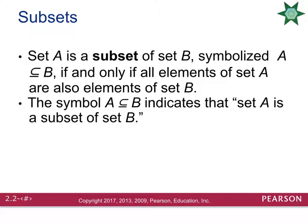The first thing we need to do is define subset. We say that A is a subset of B if and only if all the elements of A are also elements of B. So essentially, every single item that occurs in set A must also occur in set B in order to be a subset. The notation for subset looks like a sideways U with a line underneath it. I like to think of the line underneath as an equal sign, so it is okay in a subset if the two sets are equal to each other.